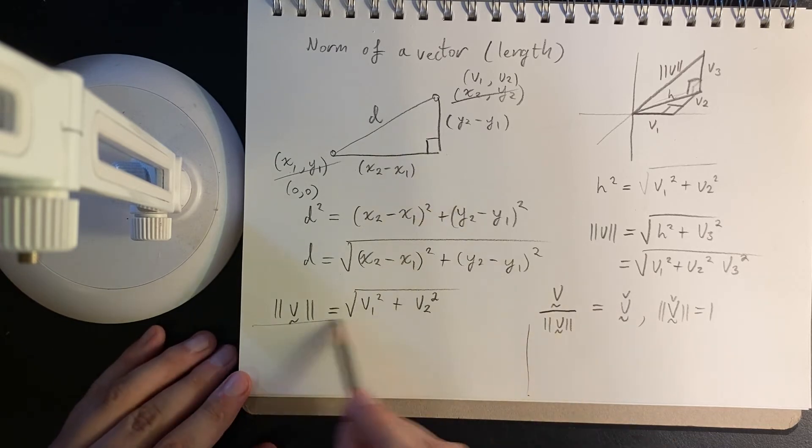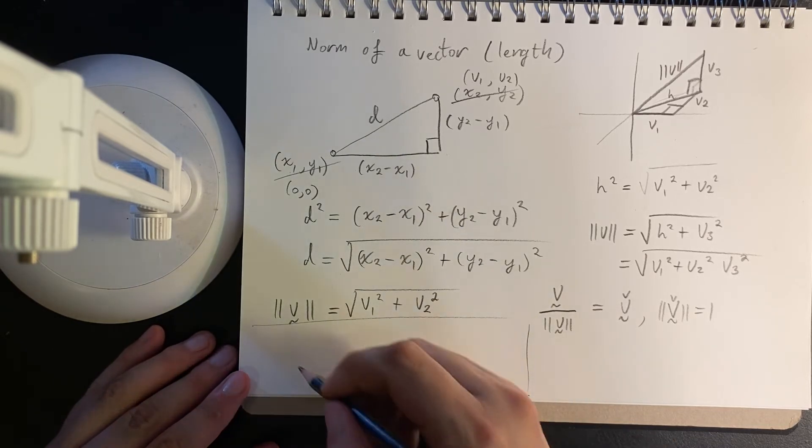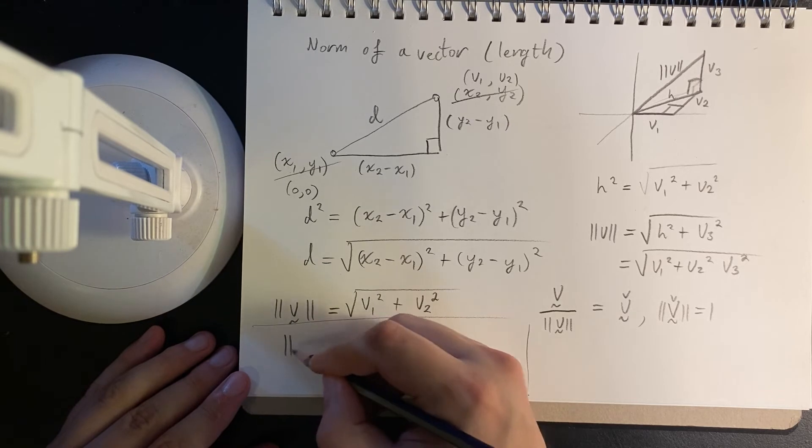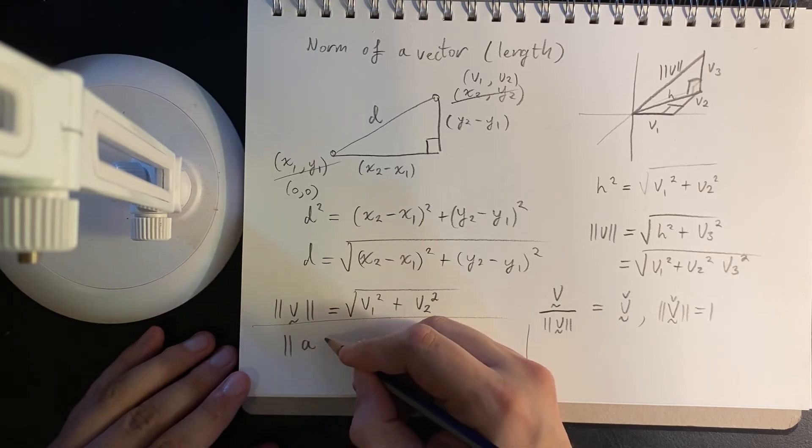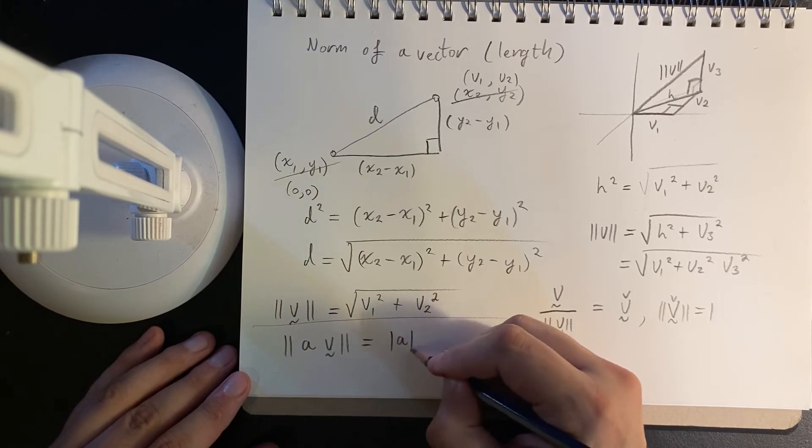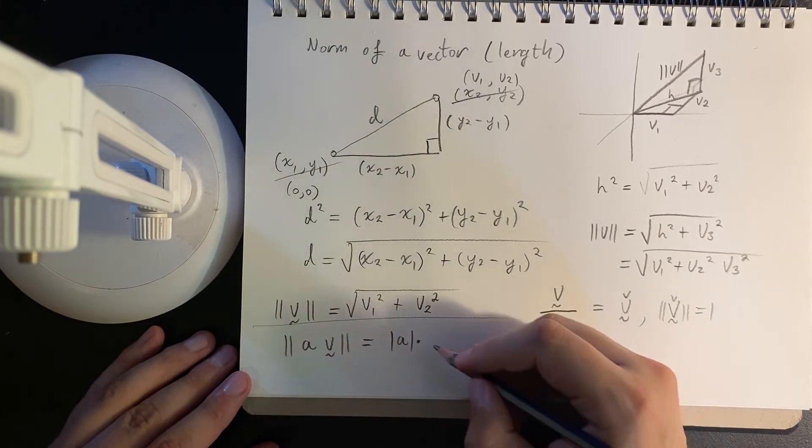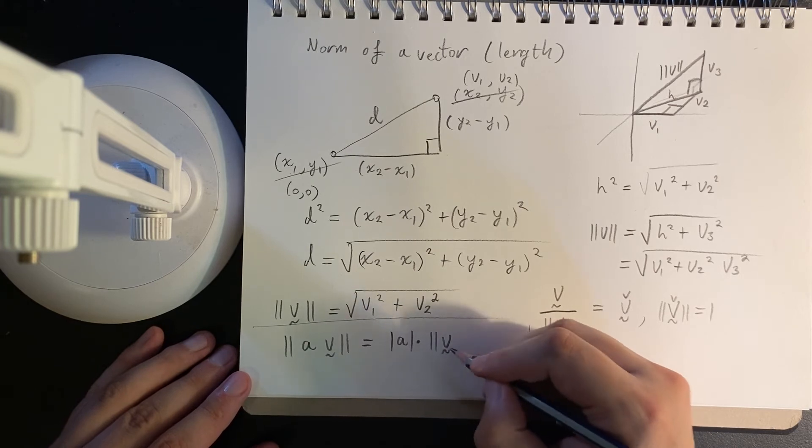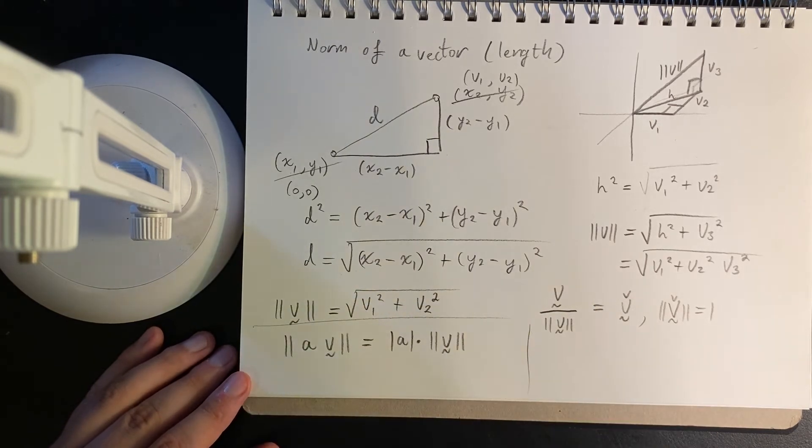Now, to sort of prove that, it's not too hard, but I am just going to state something. If I take the norm of a real number times a vector, then that is equal to taking the absolute value of the real number and multiplying it by the norm of the vector. And that's the proof, that's the property that I'll use here.